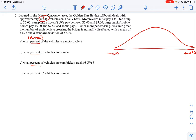We have a bridge with up to 30,000 vehicles per day. Motorcycles pay a toll fee of up to $2.00, cars/pickup trucks/SUVs pay between $2.00 and $5.00, larger trucks pay between $5.00 and $7.50, and semis pay $7.50 or more. The mean is $3.75 and we have a standard deviation of $2.00. Right away, if it's normally distributed, the center of the curve is going to be our mean, so we'll mark in 3.75 and note the standard deviation of 2.00.